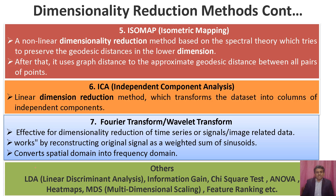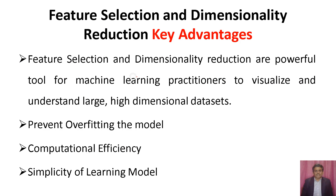There are also a few other methods for dimensionality reduction: LDA (linear discriminant analysis), information gain, chi-square test, ANOVA, heat maps, MDS (multidimensional scaling), and feature ranking. This slide also shows the key advantages of feature selection and dimensionality reduction.